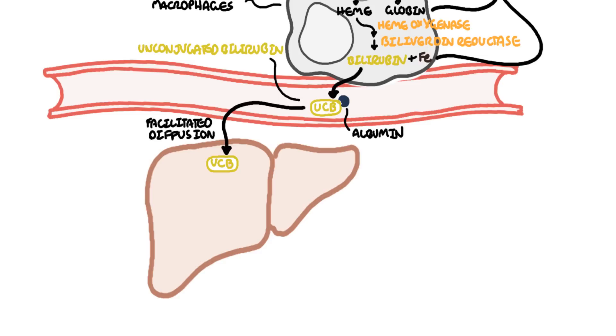Bilirubin enters the hepatocytes through facilitated diffusion, essentially through a concentration gradient. Here they undergo what is called glucuronidation. This process makes substances such as bilirubin more water soluble, which allows it to be excreted in bile and in urine.